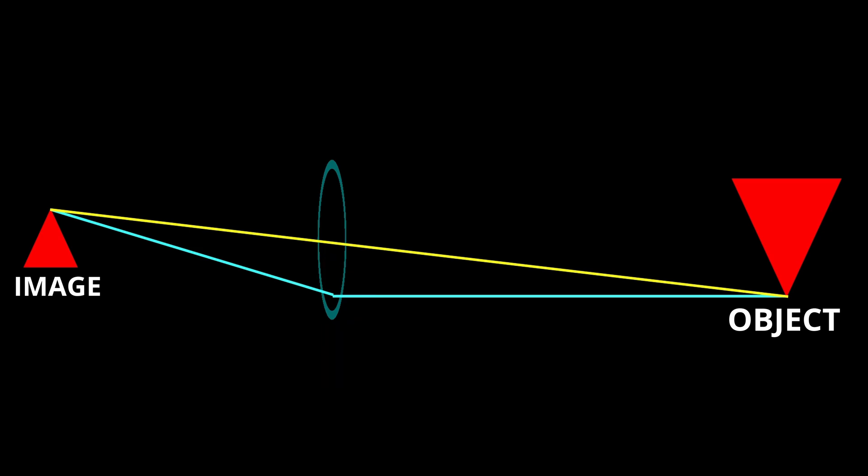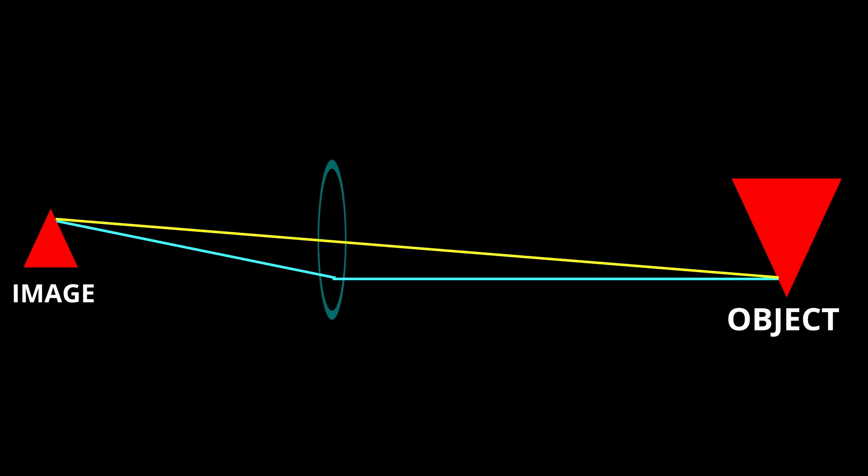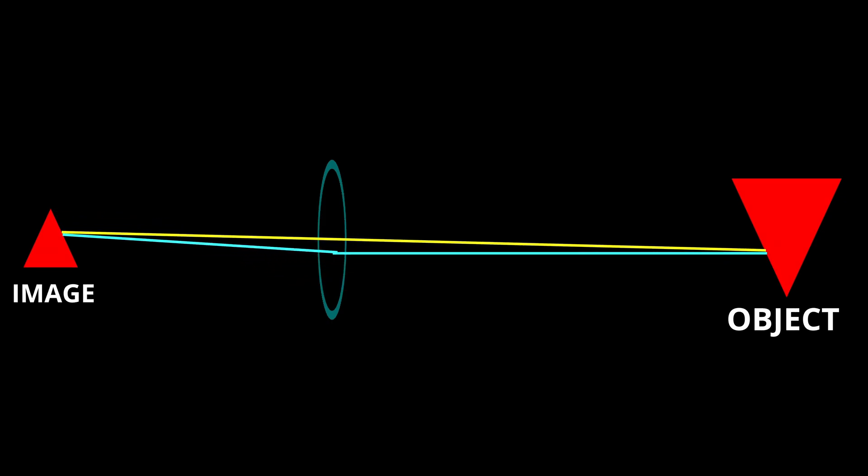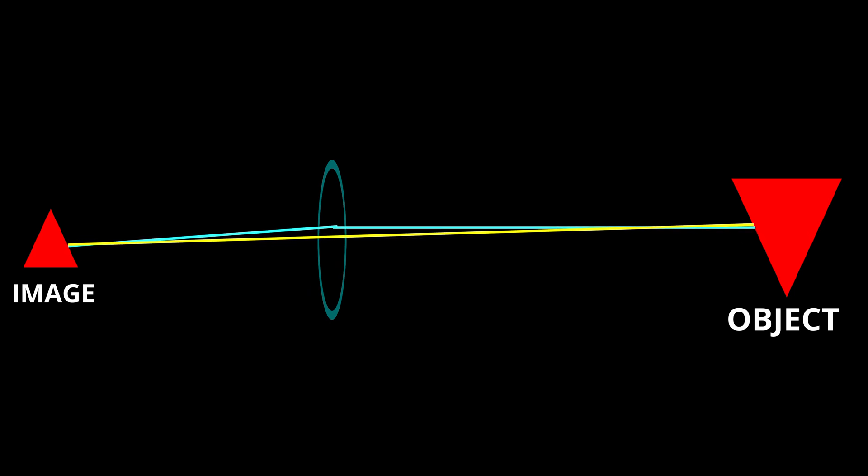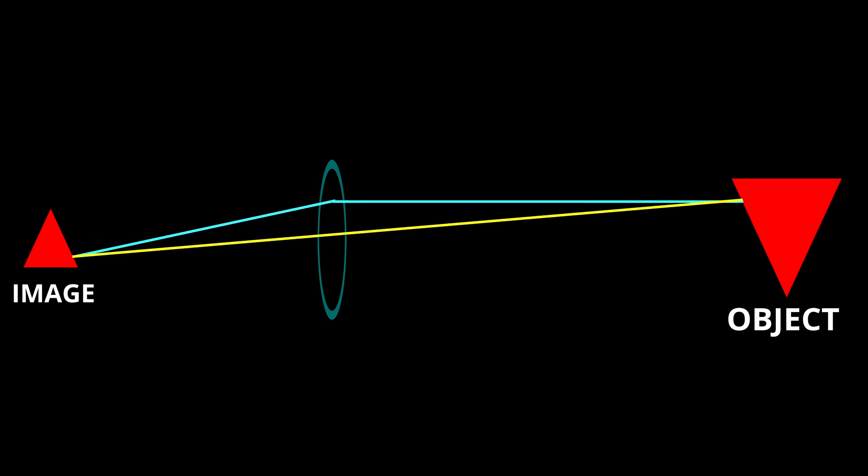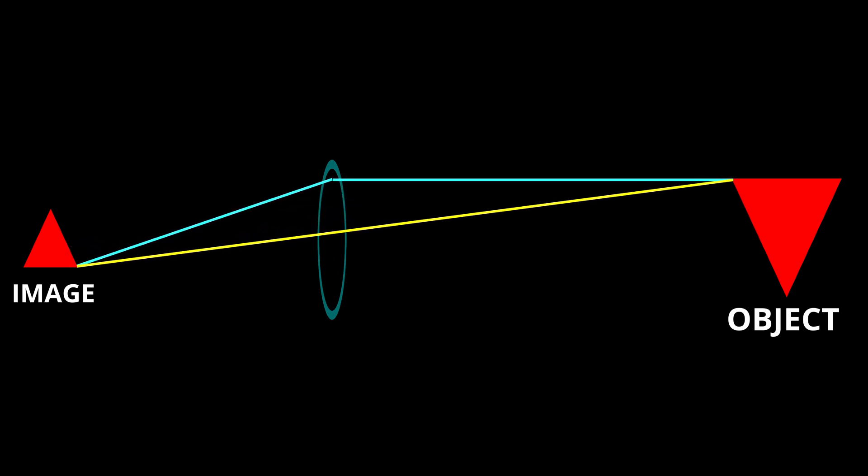To be in focus, all the light from every point of the object must reach the correlating points on the image, like this. It is important to understand that the lines in the diagram are a simplified representation of an entire field of light, millions upon millions of light waves, all traveling from the object through the lens to where the image will form at the same time, like this.